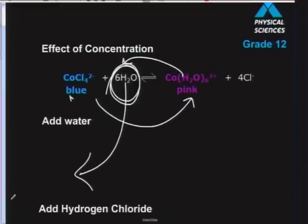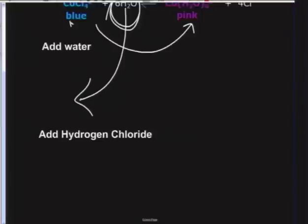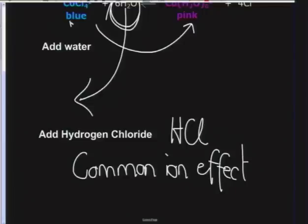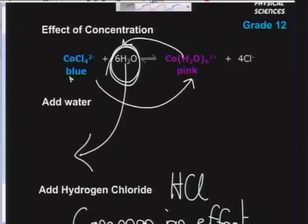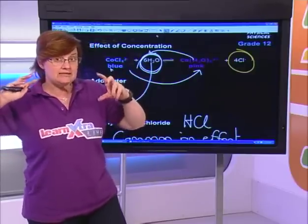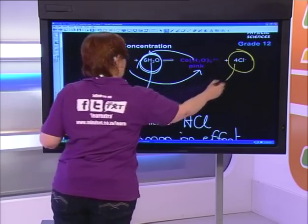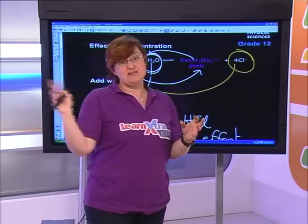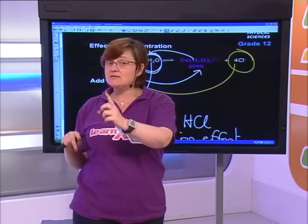When I added HCl — hydrogen chloride — I was doing what is known as the common ion effect. By adding HCl I was adding in Cl⁻ ions, increasing that concentration. What does the system need to do? The system counteracts the Cl⁻ by using it up. By using it up, it favors the reverse reaction and goes blue — now there's a lot more reactant. Whatever I do, the system does the opposite: add something, it uses it up; take something out, it makes it.